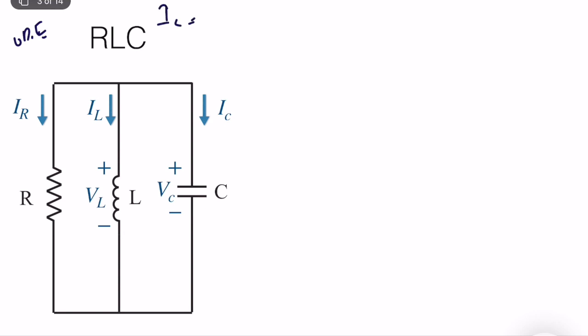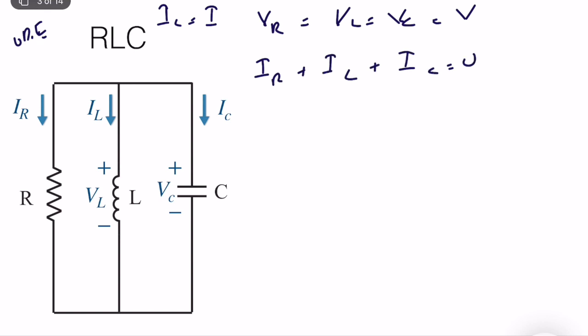Let's assume IL is equal to a simple form. We can also derive a differential equation where the dependent variable is the capacitor voltage, or even use the resistor current. These are all valid independent variables. It's given that VR equals VL equals VC because they are in parallel — let's call it V. And we know that IR plus IL plus IC equals zero, by Kirchhoff's current law.